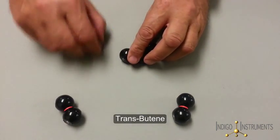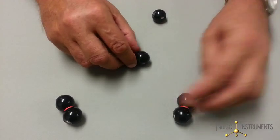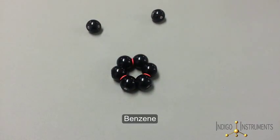We remove the methyl groups and assemble a benzene molecule.